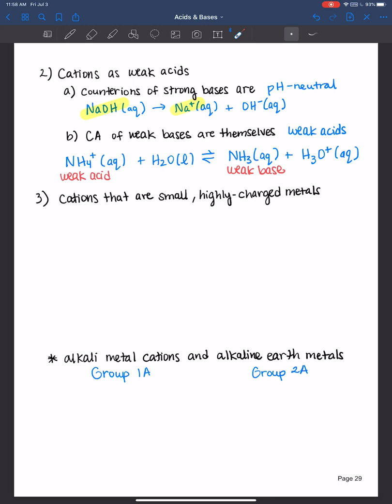Now there are other cations that also can make a solution acidic. And these are the small, highly charged metals, like aluminum 3 plus, and those transition metals.